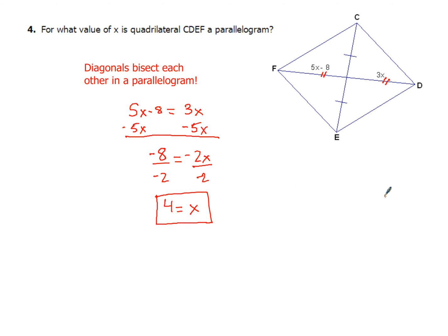Let's reread the question: what value of x makes quadrilateral CDEF a parallelogram? Well, we solved that — x equals 4. Here's where you want to double-check you didn't make a mistake. If I put 4 into the 5x minus 8 part, I have 5 times 4 minus 8. 5 times 4 is 20 minus 8, so I end up with 12. And then my other piece, the 3x part, when I put 4 in there...